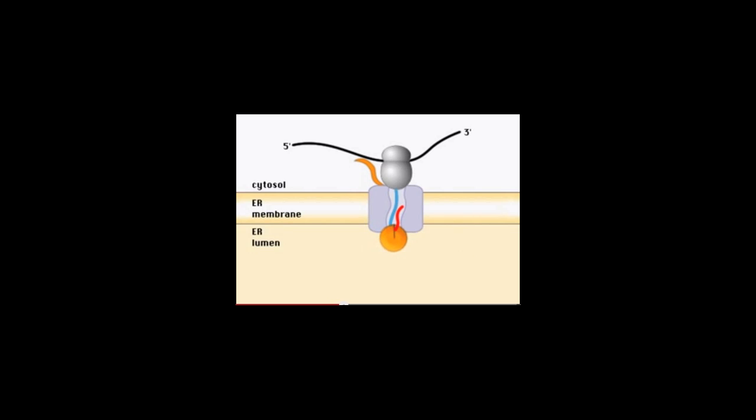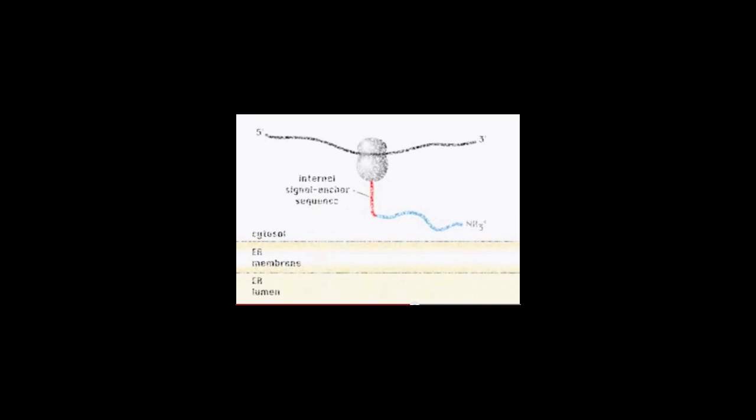The signal peptidase will recognize only an N-terminal signal sequence, cleaving it from the new protein product, and the protein now will continue being made and will end up as a soluble protein in the lumen of the ER. This is possibly like insulin or any other protein that is going to be secreted from a cell.